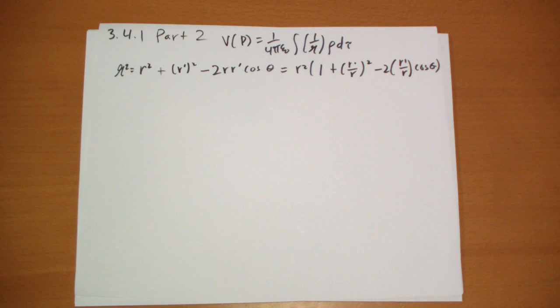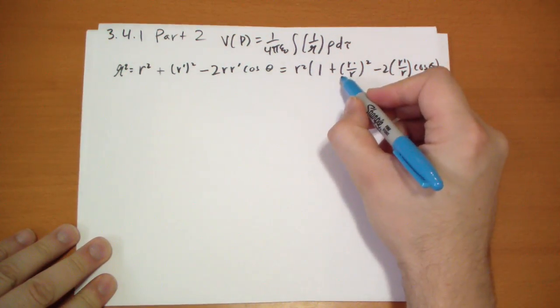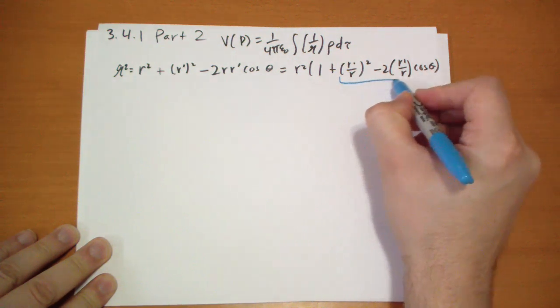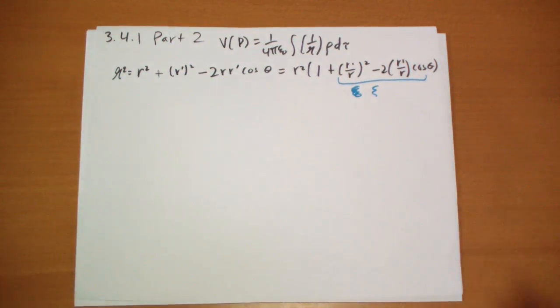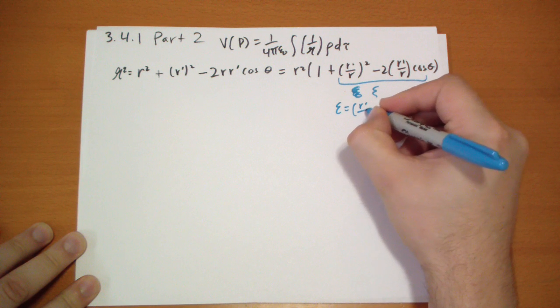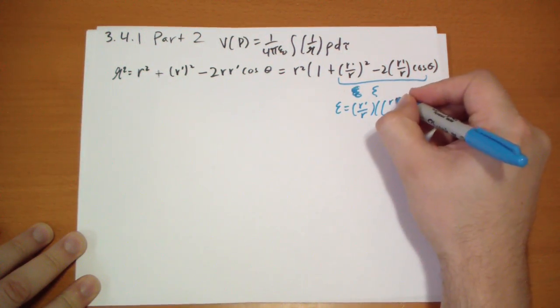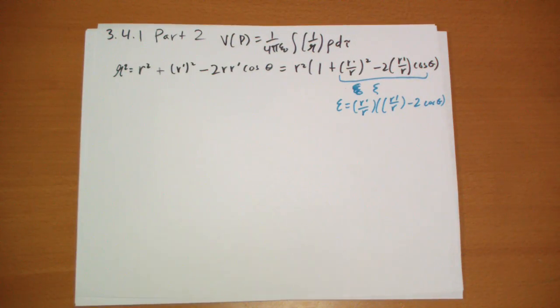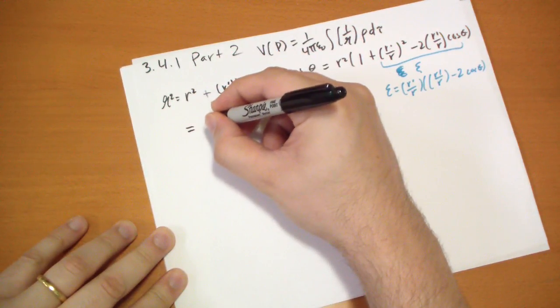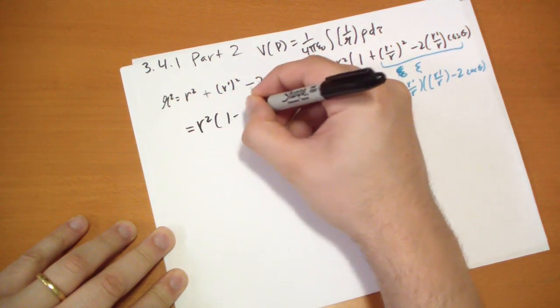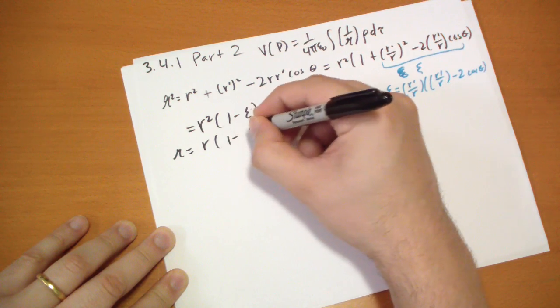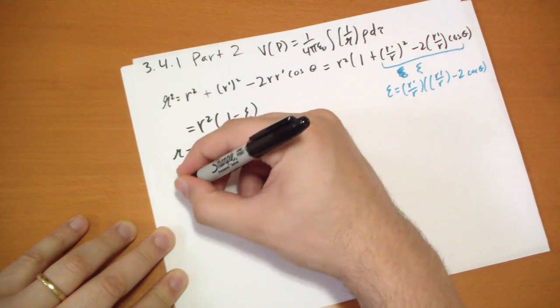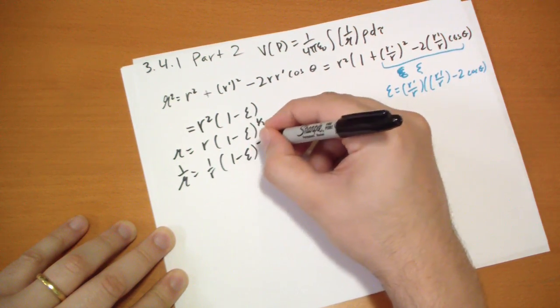As kind of a shorthand as we do the binomial expansion bit, I'm going to take this bit and call it epsilon, not epsilon naught, just epsilon, just a placeholder. We can actually express epsilon as equal to r prime over r times (r prime over r minus 2 cos theta). Now we have curly R equal to r times (1 minus epsilon) to the 1/2 power. We take the inverse, we get 1 over r times (1 minus epsilon) to the negative 1/2 power.